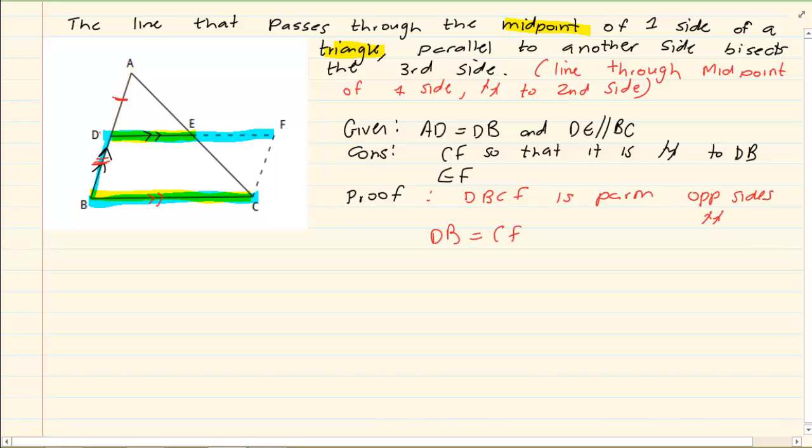Opposite sides are parallel, which would mean that DB is equal to CF. Why? Because they are opposite sides of a parallelogram.